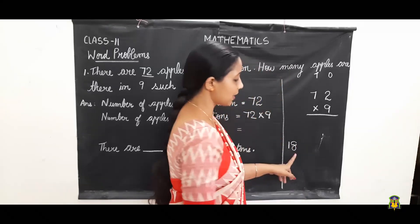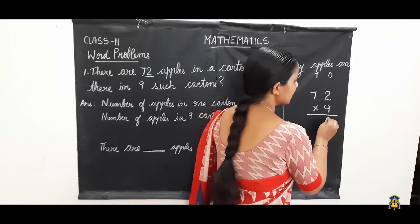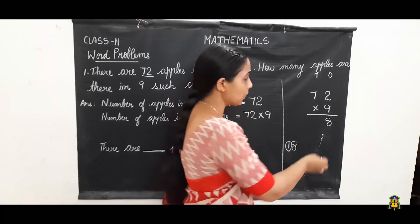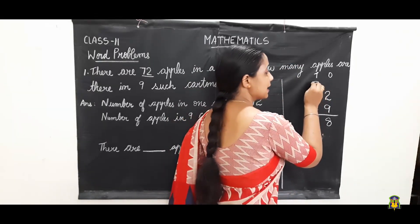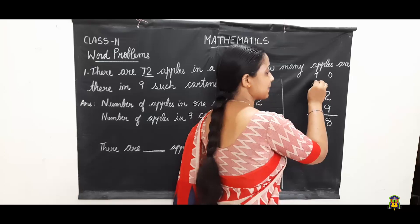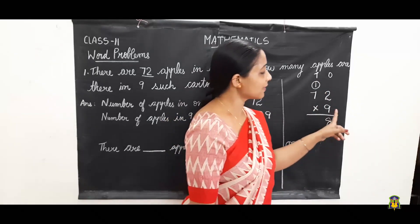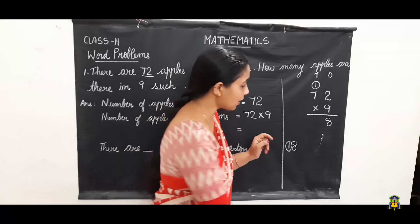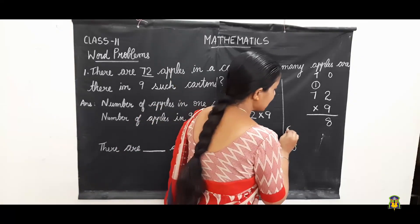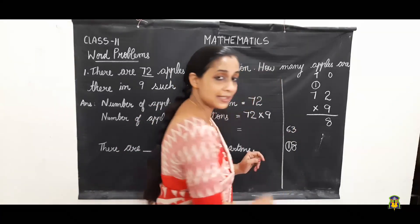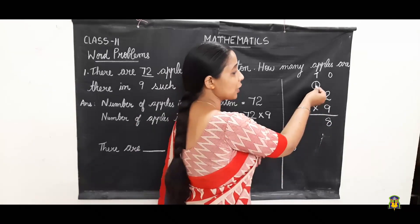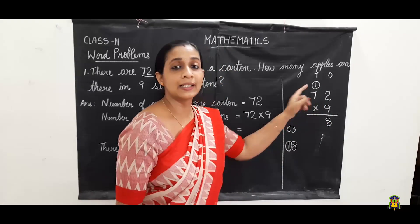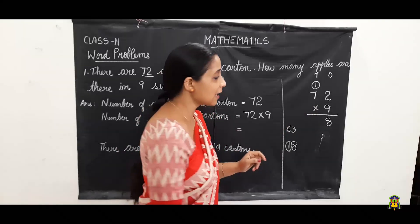We will write eight here and we will take this one as carryover to the next place, that is ten's place. What is seven times nine? Seven nines are sixty-three. We got the answer as sixty-three. But we have a carryover, so we have to add that.